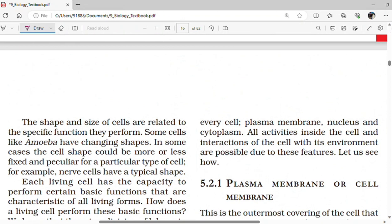The main parts of the cell: first one is plasma membrane, second one is nucleus, and the third one is cytoplasm. All the activities inside the cell and interactions of the cell with its environment are possible due to these features.